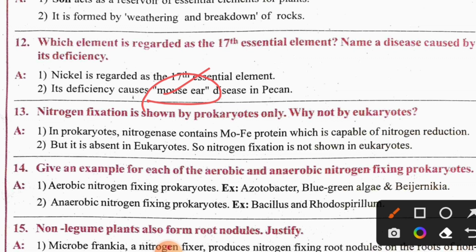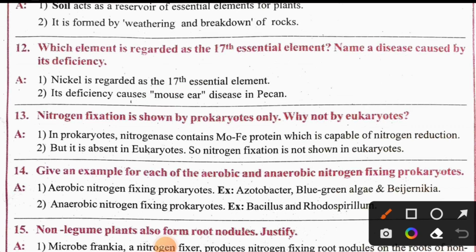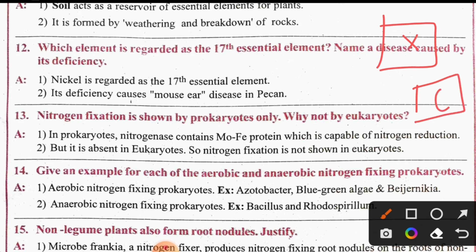Nitrogen fixation is shown by prokaryotes only, not eukaryotes. So if we have nitrogen fixation, only prokaryotes show it. Prokaryotes have a defined nucleus — this is a specific nucleus.